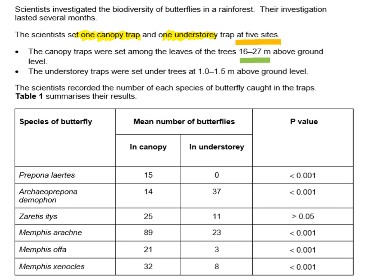The understory traps were set much nearer to the ground, only 1 to 1.5 meters off the ground — a difference of just 0.5 meters or 50 centimeters between the lowest and highest understory traps. The table shows the mean number of butterflies for each species across 5 traps for both the canopy and the understory.